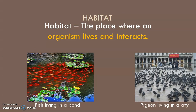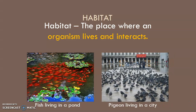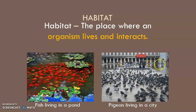A habitat is a place where organisms live and interact. It may be very different from organism to organism. For example, fish living in a pond — the pond would be their habitat. Pigeons living in a city — the city would be their habitat. My habitat is the city; some people's habitats are the country. It just depends on where they live.